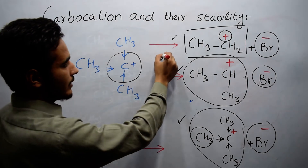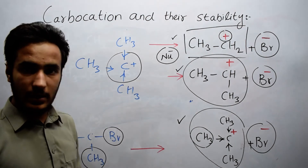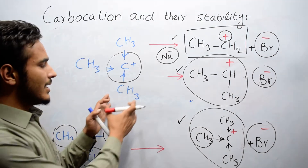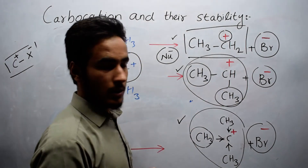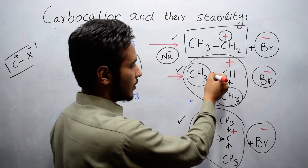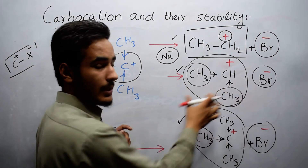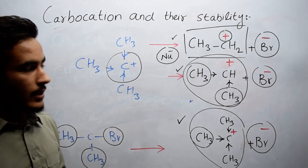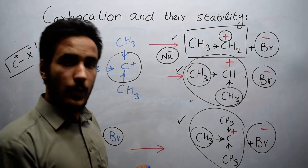Because the electron cloud density has increased in tertiary carbocation, a nucleophile cannot easily find an exact location to attack. That is why it is more stable — it does not readily undergo reaction. In secondary carbocation there are only two alkyl groups donating electrons, so the electron cloud density is lower than in tertiary, making it less stable. In primary carbocation there is only one alkyl group, so the nucleophile can easily attack the carbon.